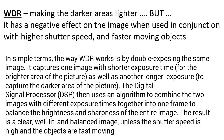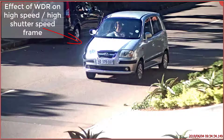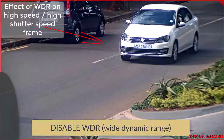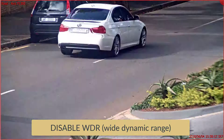WDR or HDR settings on an IP camera can affect the clarity and ability of the camera to recognize number plates. WDR works by combining two images with different exposures to produce a brighter final image. WDR used with a fast shutter speed and moving subjects can have negative outcomes, as shown in some of the resultant images.